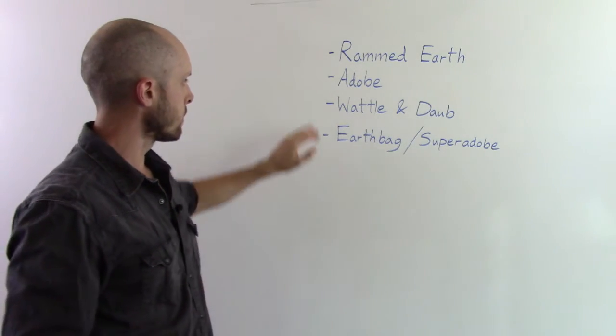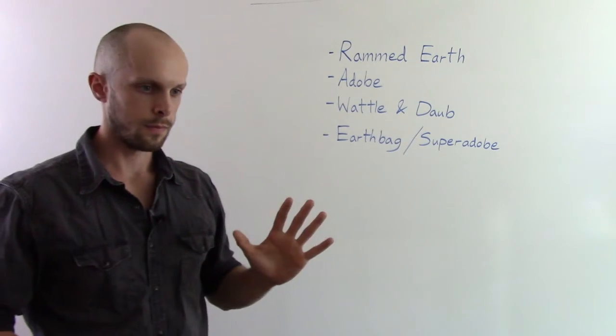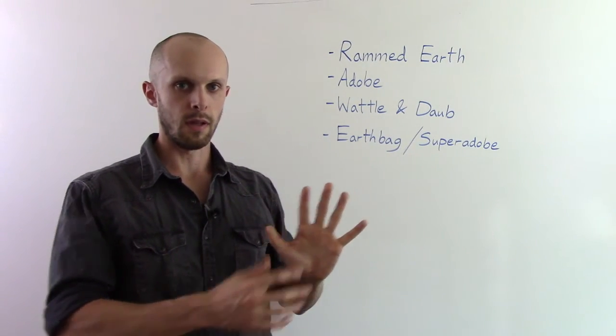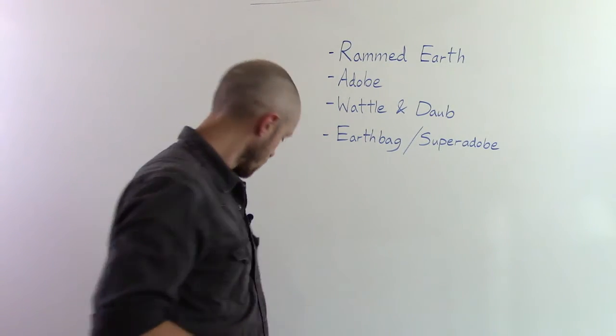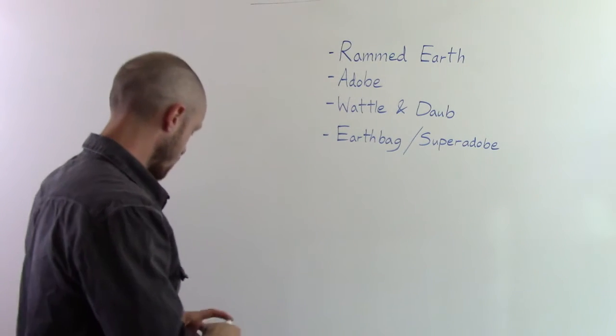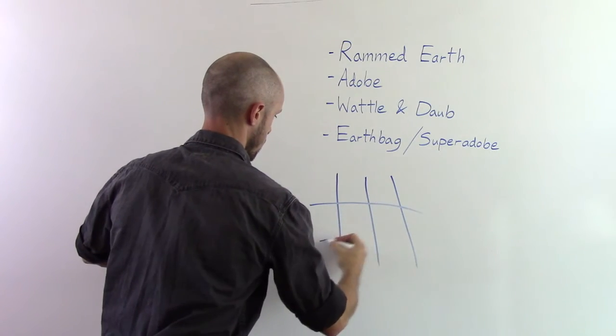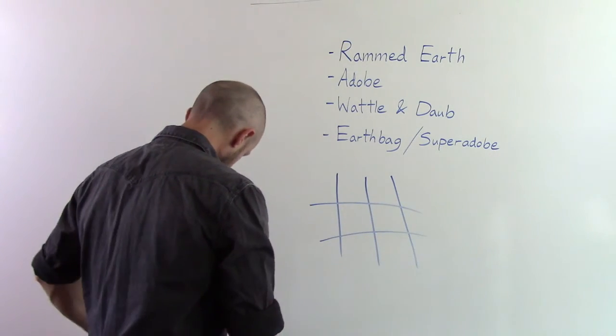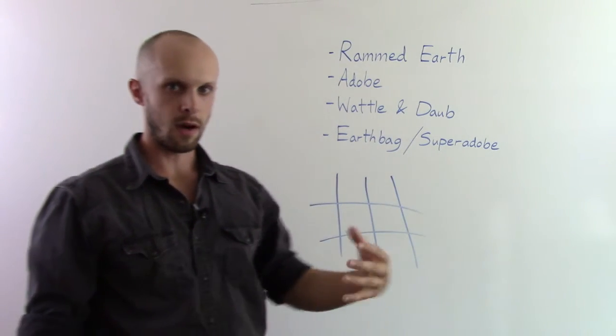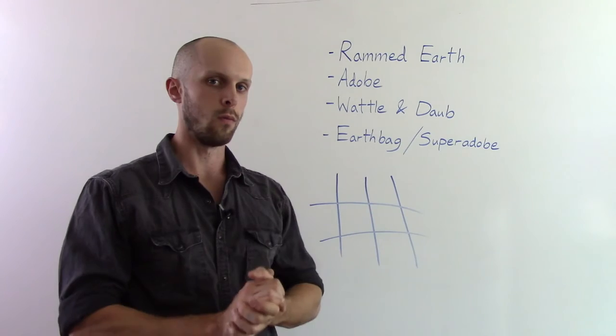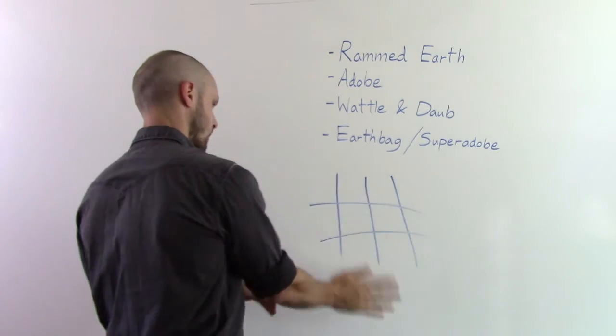And the next material here is called wattle and daub. And this material is built with a latticework. Now, this latticework, it's like a web, just a basic lattice. And what you do is you have, this is called the wattle. And then the daub is much like cob, maybe a little more wet. So you take the daub and you pack it onto the wattle.